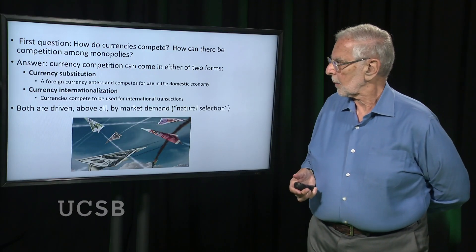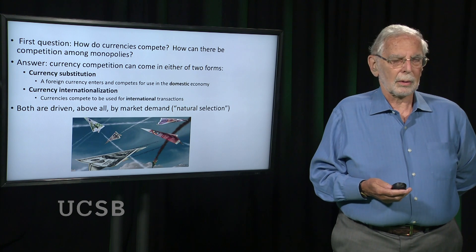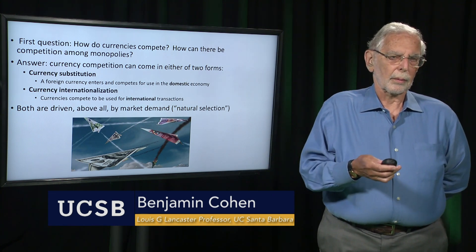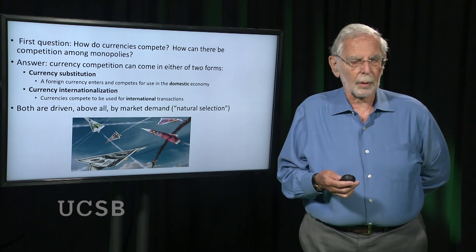So, two questions: how can there be competition between currencies if each one of them is a monopoly? The answer, obviously, is that each of them is only a monopoly within its own borders, but they can compete across borders. That's where currency competition comes in. There are two forms of currency competition: what we call currency substitution and what we call currency internationalization.